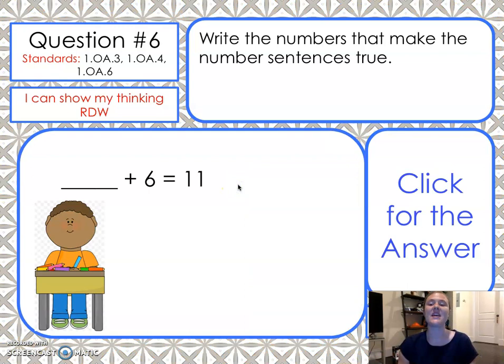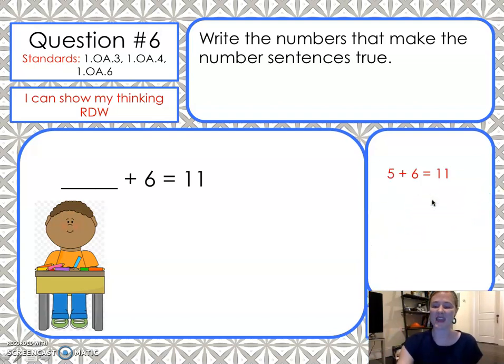Write the number sentences that make the number sentences true. Blank and six make eleven. Hmm. If I know that six and four make ten, six and... Make eleven. If you need some support, draw a picture. Count on. I'm showing you the answer now. If you need more time to solve, please press... You guessed it. Pause. Five and six make eleven.